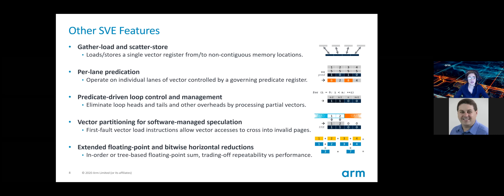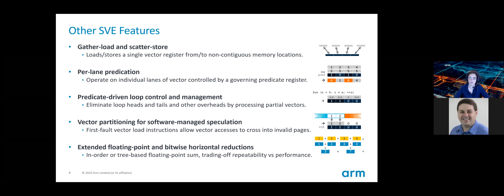Let me tell you about some of the other features of SVE. It's got gather loads and scatter stores, and per-lane predication where you can operate on individual lanes of the vector with a predicate register controlling operations. We also have predicate-driven loop control and management, which eliminates traditional loop head or tail overheads when processing partial vectors — you just set a predicate. There is also vector partitioning for software-managed speculation with first-fault vector load instructions that allow vector accesses to cross into invalid pages, masking the predicate register appropriately. SVE also extends floating-point and in-order or tree-based floating-point reductions, trading repeatability versus performance.